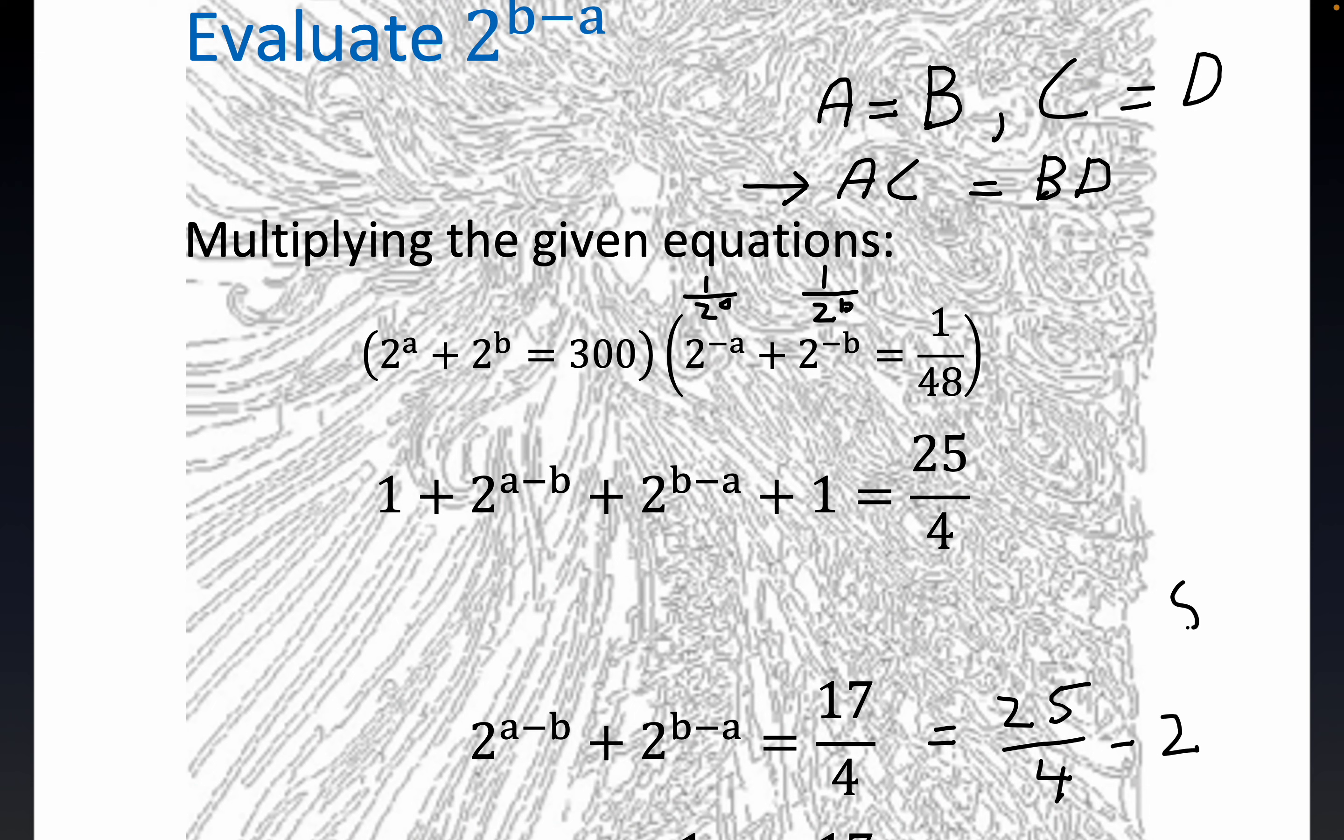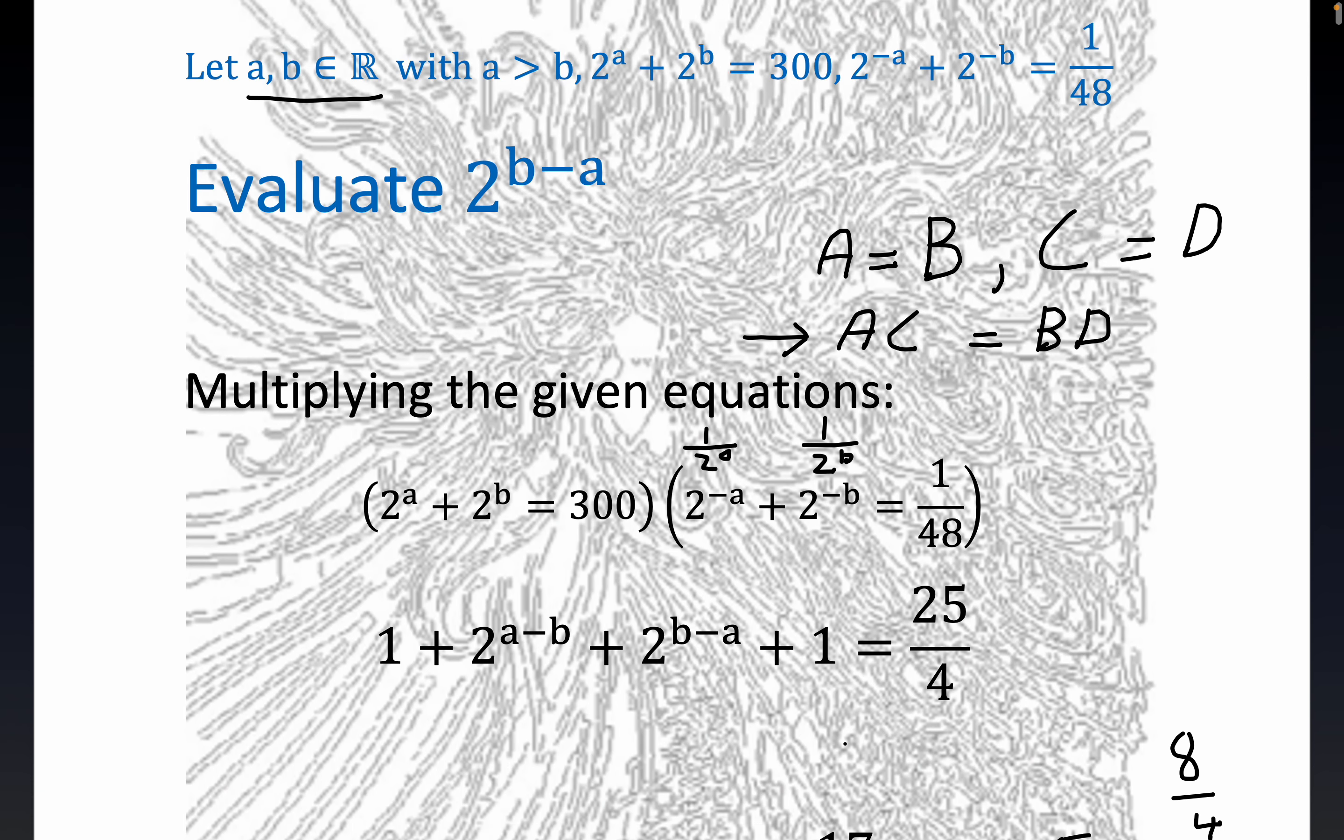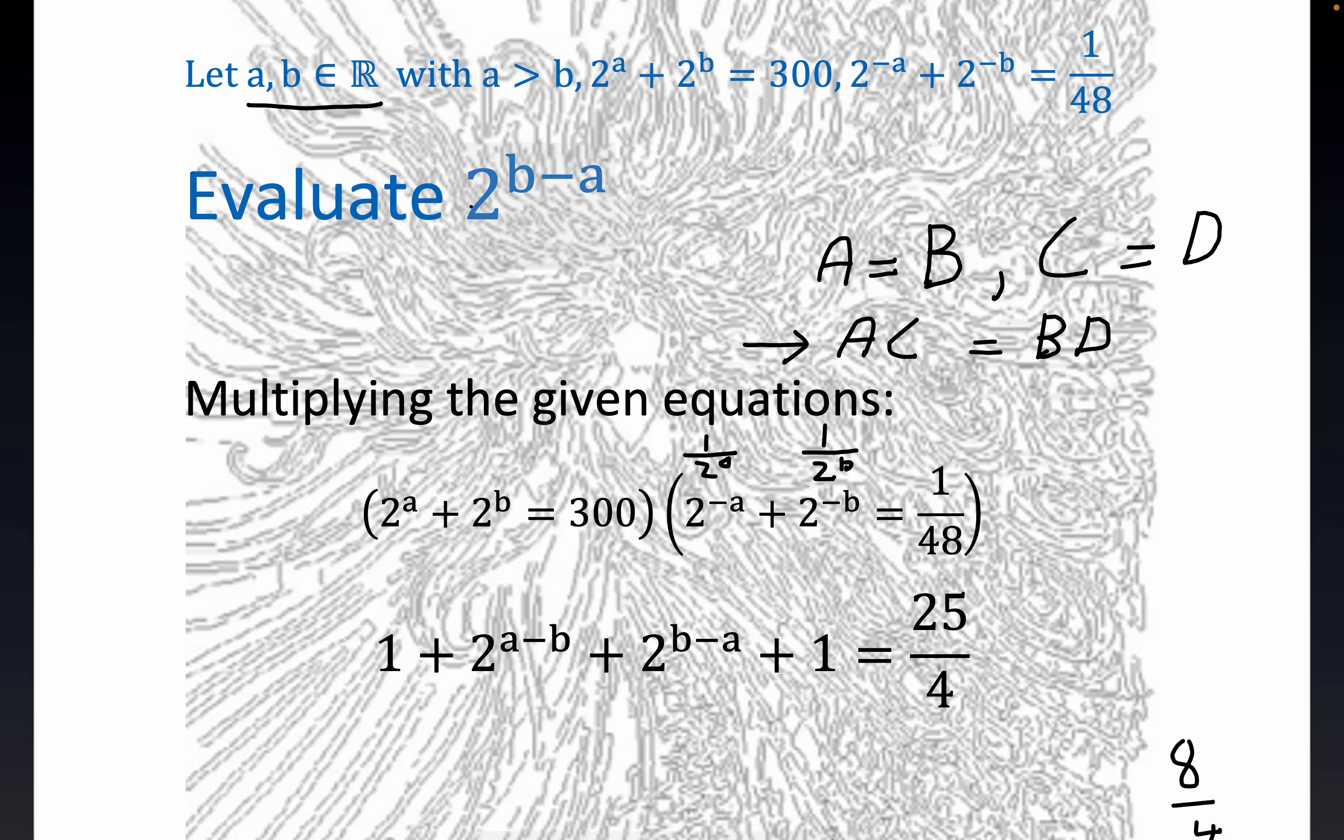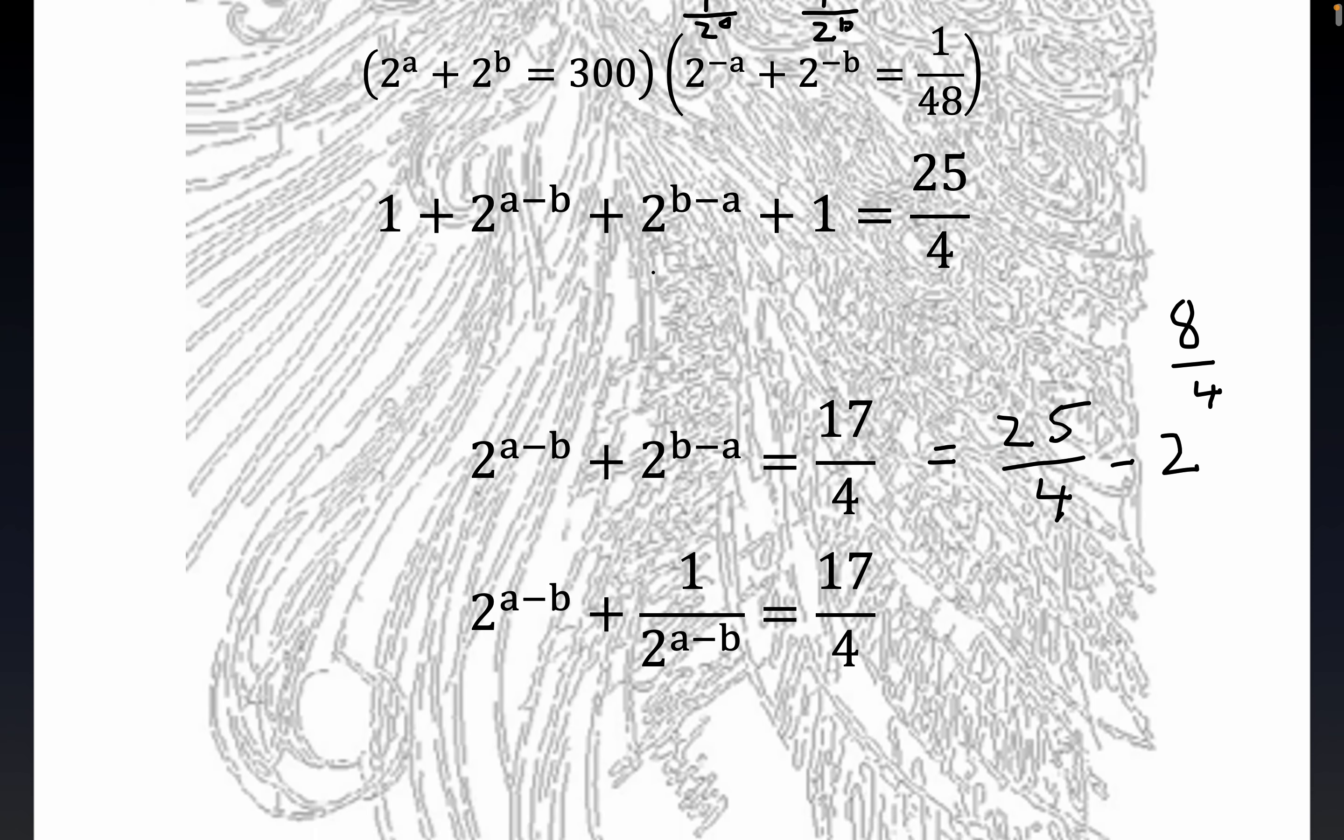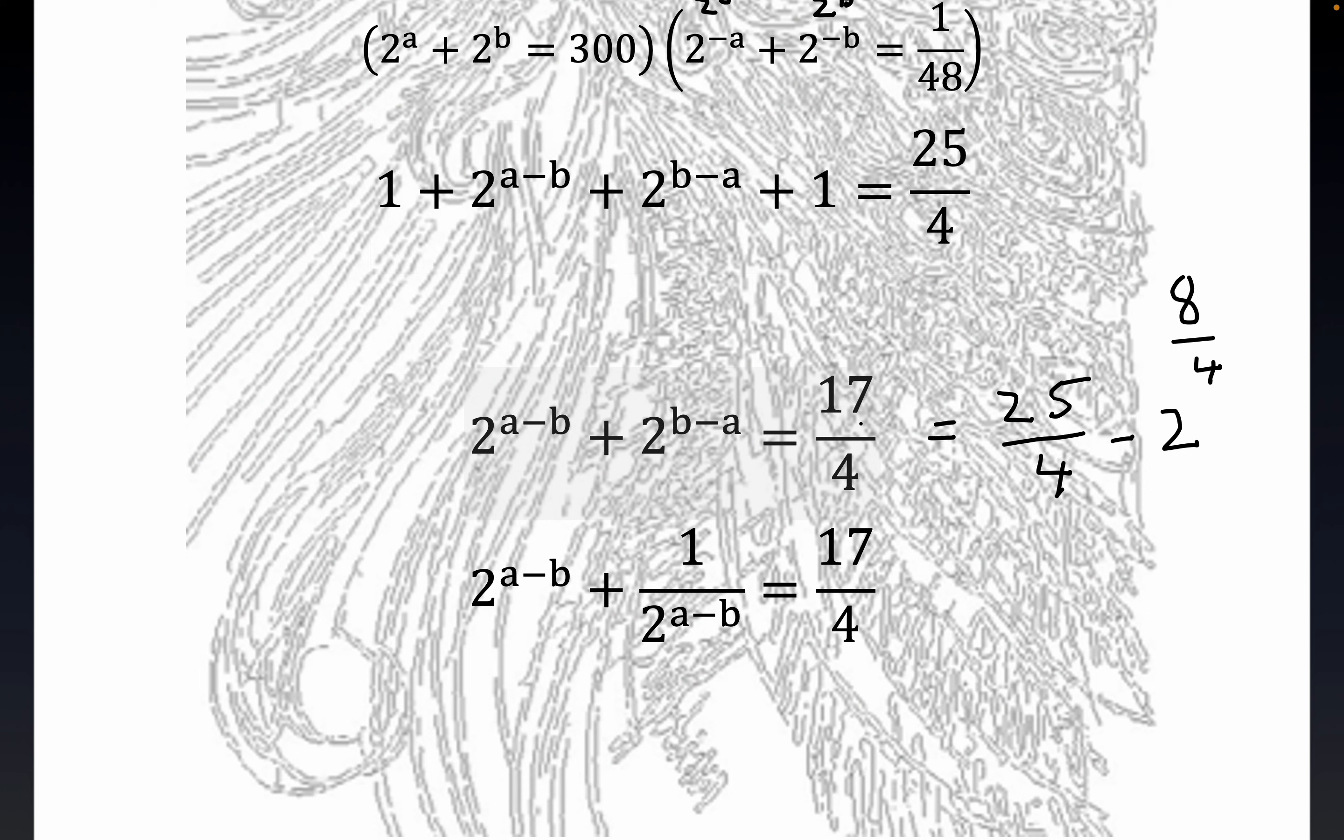Now onto the last line here. What were we supposed to find? We're supposed to find 2 to the B minus A. But notice this is fairly easy to figure out because this is the very same thing as 4 and 1 fourth, right?